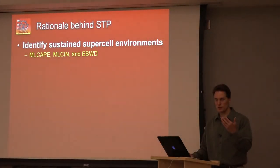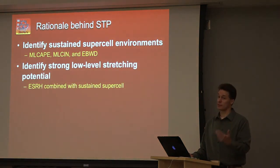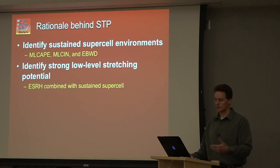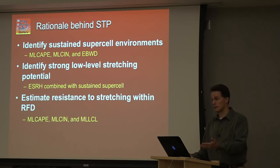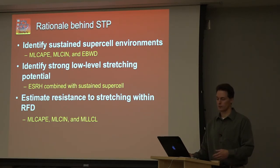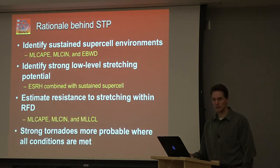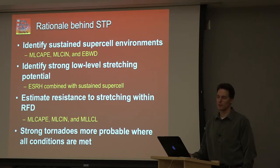The rationale: we want sustained right-moving supercells, and we have ingredients to reflect that. We want the potential for strong low-level stretching — that's where effective SRH and convective inhibition come in. We need to say something about the rear flank downdraft and how potentially buoyant it is, which is a function of inflow buoyancy, how much CAPE you start with, how much inhibition, and evaporational potential loosely represented by LCL height. When all of these conditions are met, strong tornadoes are more probable — not guaranteed with every storm, but much more probable.